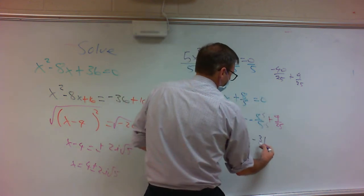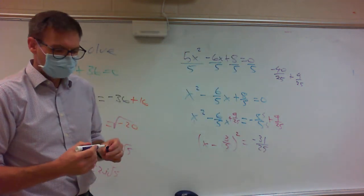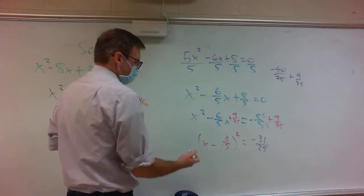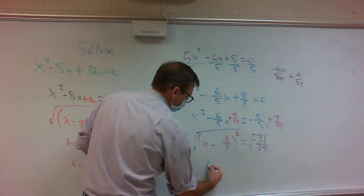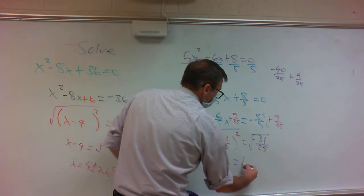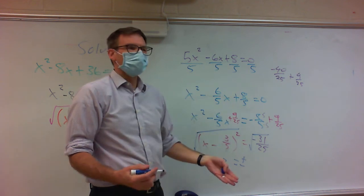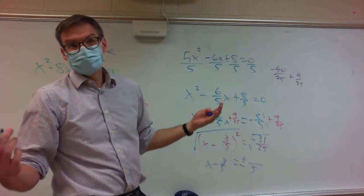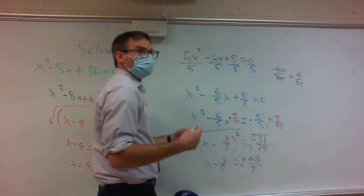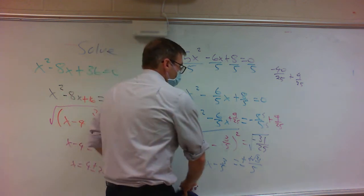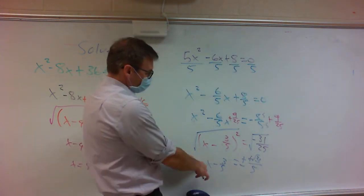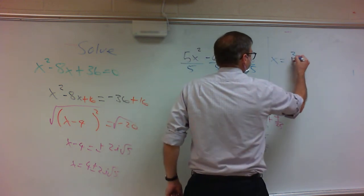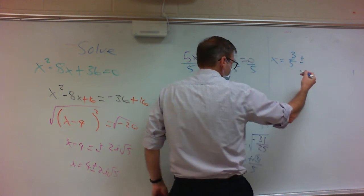Multiply negative 8 over 5 by 5 over 5 to get negative 40 over 25, plus 9 over 25, giving negative 31 over 25. Now treat it like the other problems. Take the square root of both sides: x minus 3 over 5 equals plus or minus the square root of negative 31 over 25. Square root of a fraction is the square root of the top over the square root of the bottom — the square root of 25 is 5, and the square root of negative 31 is i times the square root of 31.